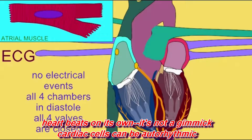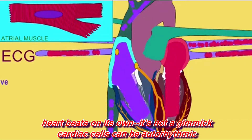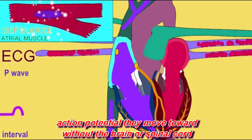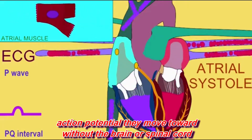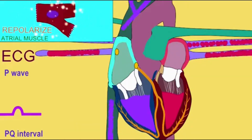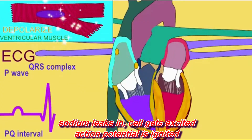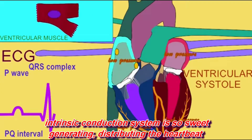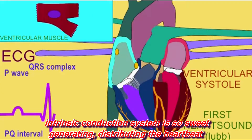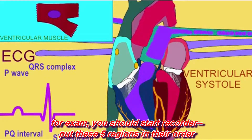Heartbeat's on its own, it's not a gimmick. Cardiac cells can be auto-rhythmic. Action potential, they move on without the brain or spinal cord. Sodium leaks and cell gets excited, action potential is then ignited. Intrinsic conduction system is so sweet, generating, distributing the heartbeat.